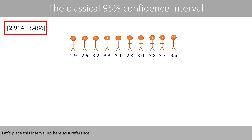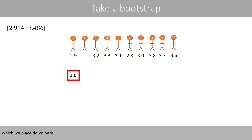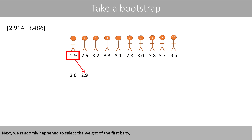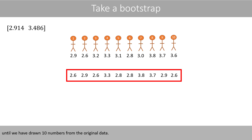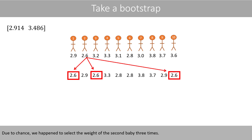Let's place this interval up here as a reference. We will now calculate the corresponding 95% confidence interval based on bootstrapping. Since we have 10 values, we will take a bootstrap sample of 10. Suppose that we randomly select a value, which we place down here. We then replace the empty space with the same value, which means that we sample with replacement. Next, we randomly happen to select the weight of the first baby, and then we happen to select the weight of the second baby again.